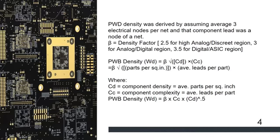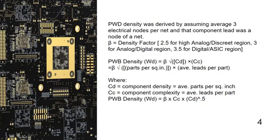How is this density factor calculated? There is a formula: wiring density WD equals beta times the square root of CD times CC, where CD is the parts per square inch and CC is the average leads per part. Beta is a factor for calculating the density — normally 2.5 for analog and discrete regions, 3 for analog and digital regions, and 3.5 for digital and ASL.